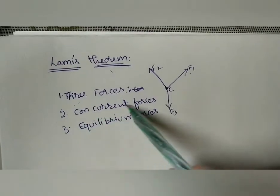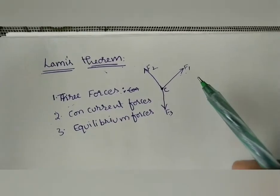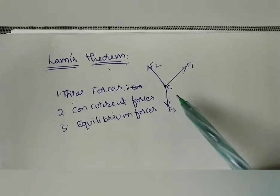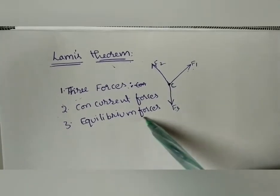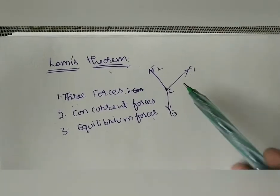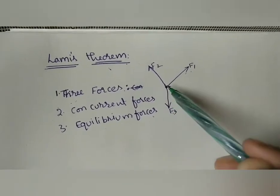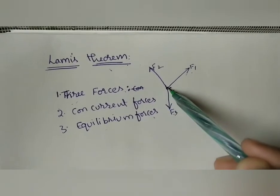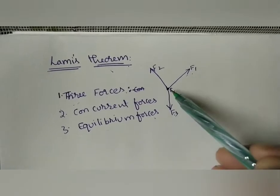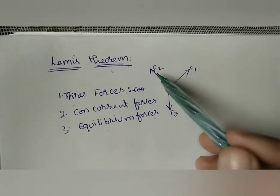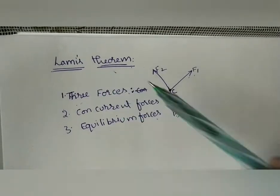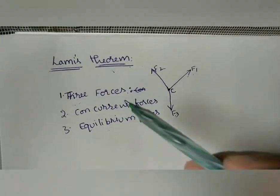The second condition for applying Lami's Theorem is that the three forces must be concurrent forces. The third condition is that all three forces must be in equilibrium — meaning after applying all three forces, the point remains at the same constant place. These are the three conditions for applying Lami's Theorem.